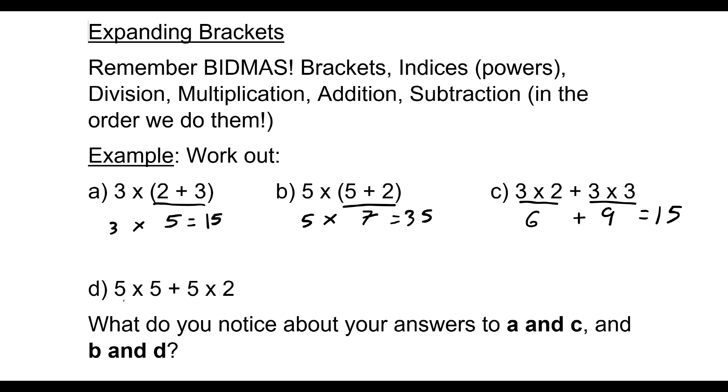In D, we have 5 times 5, which is 25. 5 times 2 is 10, we add them up, and we get 35.